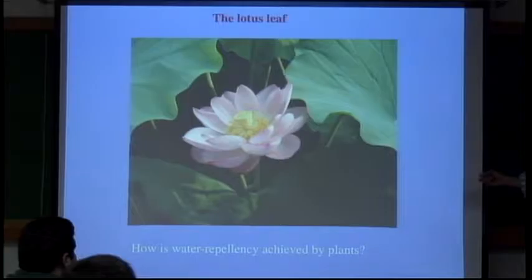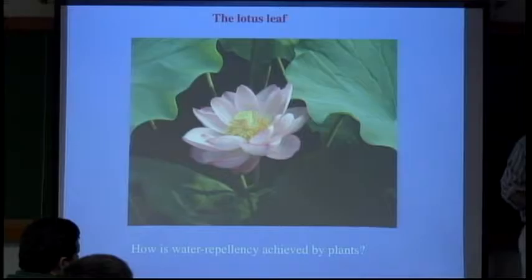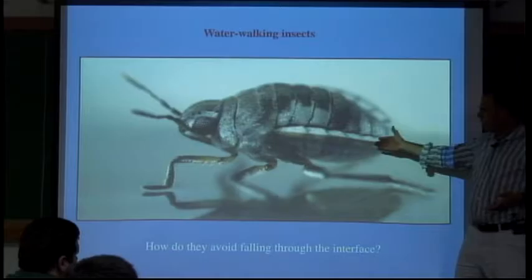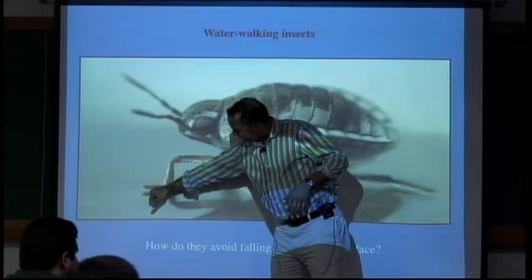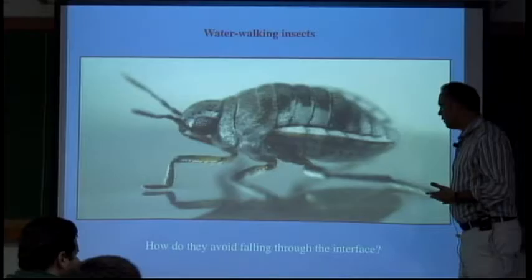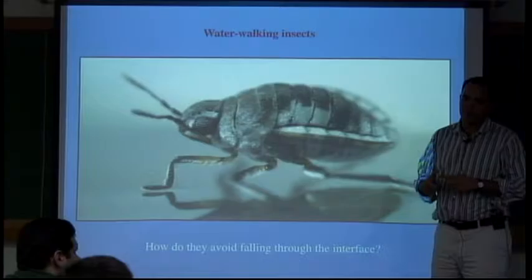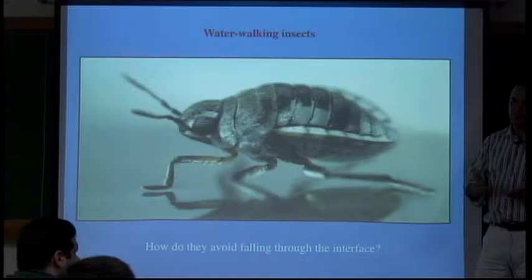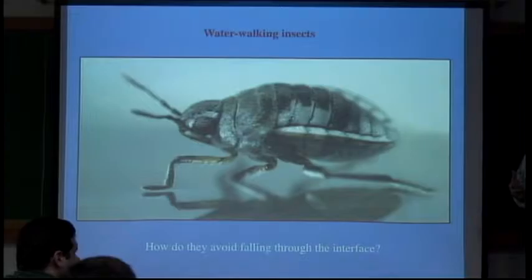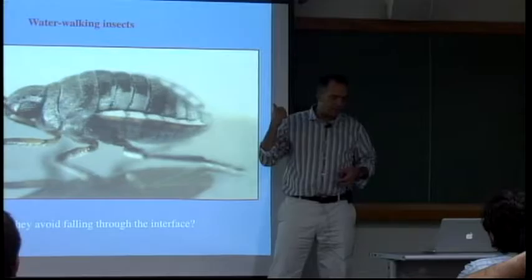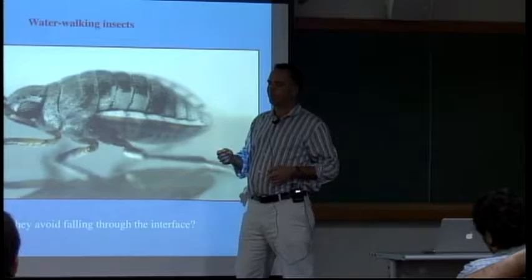How is water repellency achieved by plants? If you've ever seen a raindrop on a lotus leaf, it rolls around with great ease. If you look closely at water walking bugs, you see there's a thin layer of air in which the water never actually penetrates the surface coating. This is exactly why they don't fall through the interface. The natural designs for water repellent surfaces as used in plants and bugs form the basis of man-made water repellent surfaces — for example, Gore-Tex and Teflon have surface texture and surface chemistry similar in spirit to these. This is really a classic example of the success of biomimicry.